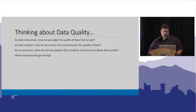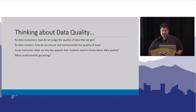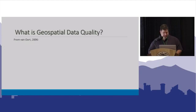What could possibly go wrong? Back in the Bosnia conflict, the U.S. bombed the Chinese embassy and they blamed it on spatial data quality. So lives are at risk to some extent when we think about the quality of the data that we use.